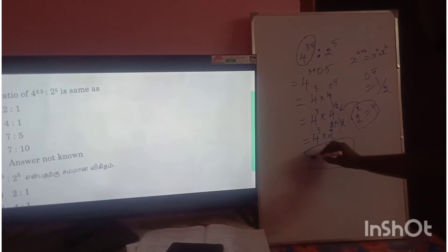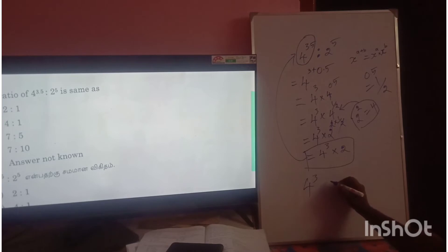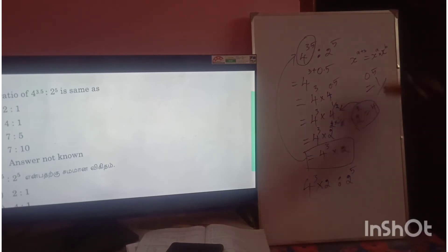The ratio becomes 4^3 times 2 to 2^5. 4^3 equals 64.